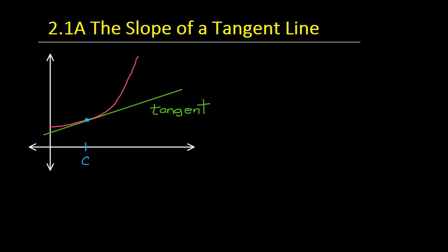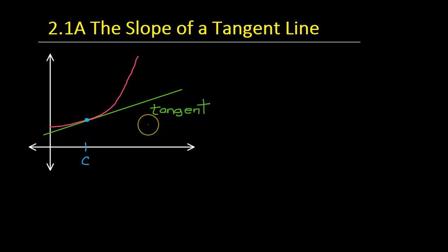Here we are. This is the first video of Unit 2. Unit 2 is all about something called a derivative, which is just a fundamental part of what we call calculus. The derivative is based on the slope of a tangent line at a point. In this video, we're going to start from the very beginning and show you how to find the slope of a tangent line at a point using limits — from Unit 1.